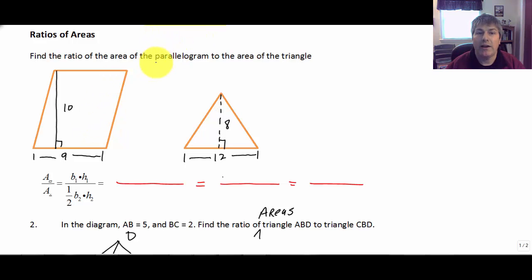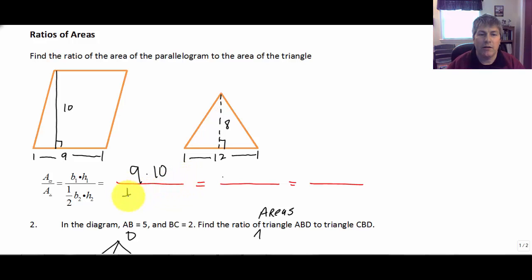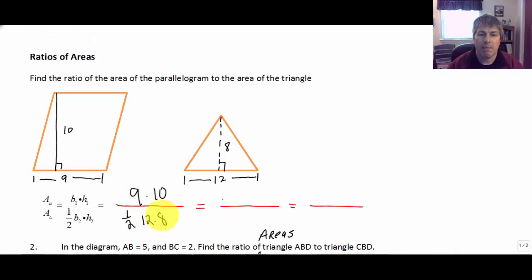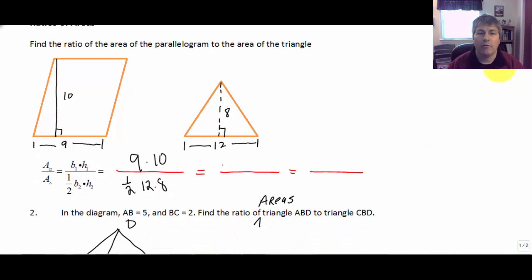So if we're asked to find the ratio of the areas, we're talking a fraction here, and all we need to do is find those two areas and see what fraction that comes out to. The ratio: the area of our parallelogram is base times height, so we're looking at 9 times 10, and the area of the triangle is one-half of 12 times 8. Since we're working with ratios and fractions, we can go ahead and reduce and simplify. I could look at this as 9 times 10 over 6 times 8.